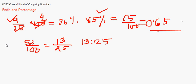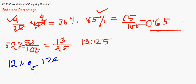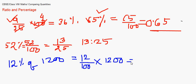Next comes finding the percentage of a given number. For example, 12% of 1200. First, represent 12% as a fraction: 12/100, then multiply by 1200. The two zeros cancel, giving 12 × 12 = 144. So 12% of 1200 is 144.